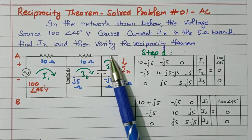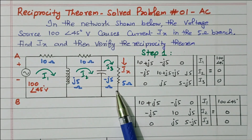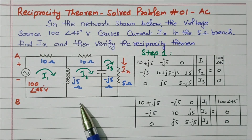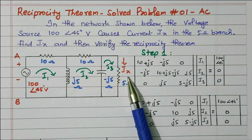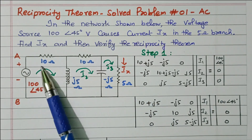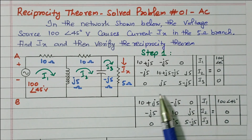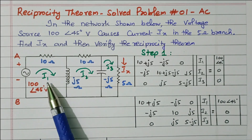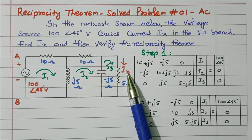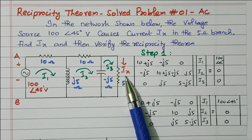First we will consider the circuit as given and find the IX value. In step 2 we will transfer the voltage source to the third branch and find the current in the first branch, which should be equal to IX. We will follow the matrix method using Kirchhoff's voltage law — the loop method using matrix: V = I × R. This is the voltage matrix, current matrix, and impedance matrix. We have 3 loops: loop 1, loop 2, loop 3. I3 is the current in loop 3, and that same current flows through the 5 ohm resistor. That is also IX. What we need to find is IX, which is I3.